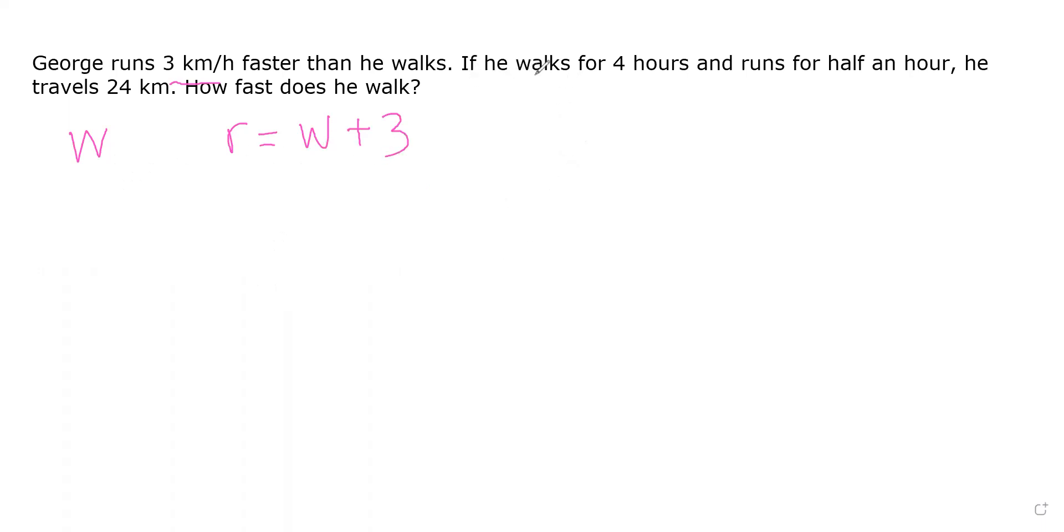Here it says he walks for four hours and runs for half an hour. Speed is equal to distance divided by time, so kilometers per hour. Therefore, if we multiply t by both sides, distance is equal to speed times time.